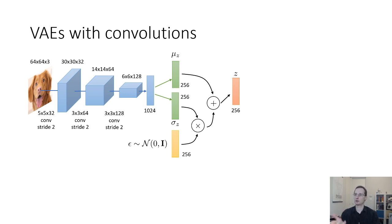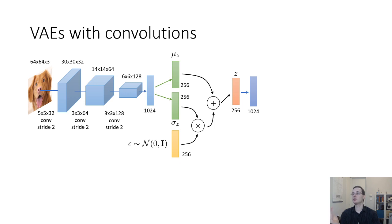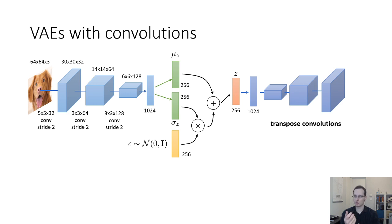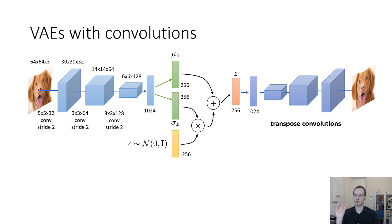If you want to use the VAE for representation learning — for example, a downstream classification task — z is the vector you'd use as your compressed representation. For training the VAE, you also need the decoder, which uses transpose convolutions. First a fully connected layer takes z up to higher dimensionality like 1024, then three layers of transpose convolutions upsample back to a 64 by 64 image. You train end-to-end with two loss terms: the negative log probability of the image and the KL divergence between the distribution defined by mu_z and sigma_z and the prior p of z, typically a zero-mean unit-variance Gaussian.